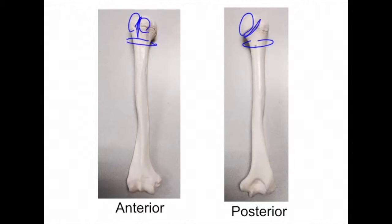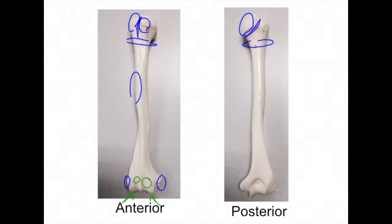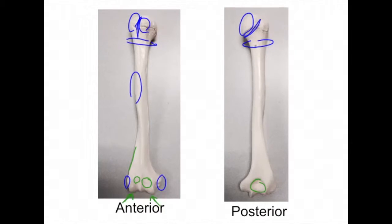In between the greater tubercle and the lesser tubercle is our intertubercular sulcus located here. We can also see the deltoid tuberosity located here. Moving distally on the humerus, we can see the medial epicondyle, the lateral epicondyle, the trochlea, the capitulum, the radial fossa, and the coronoid fossa. The trochlea will articulate with the ulna, while the capitulum will articulate with the head of the radius. Looking on the posterior side, we can see the olecranon fossa, where the olecranon process of the ulna will fit into. We can also see the lateral supracondylar ridge and the medial supracondylar ridge.